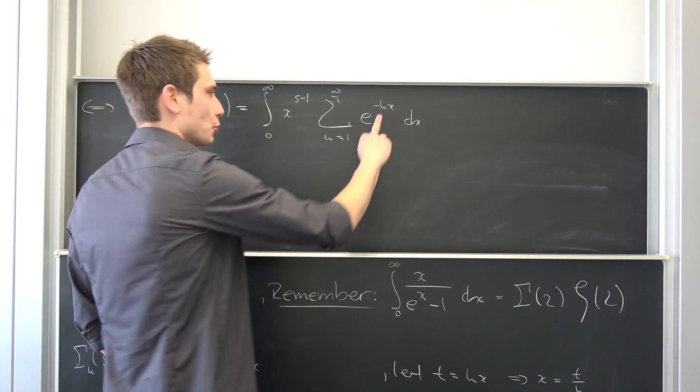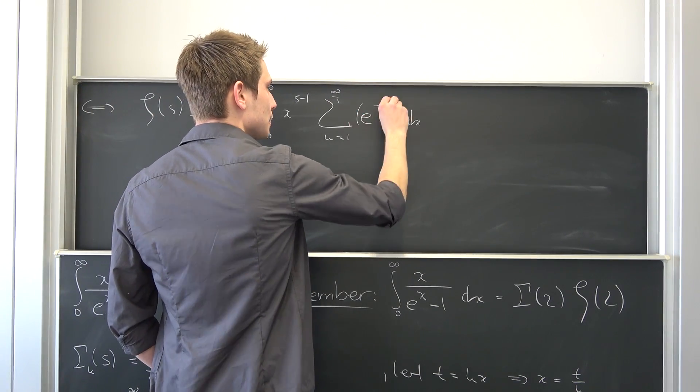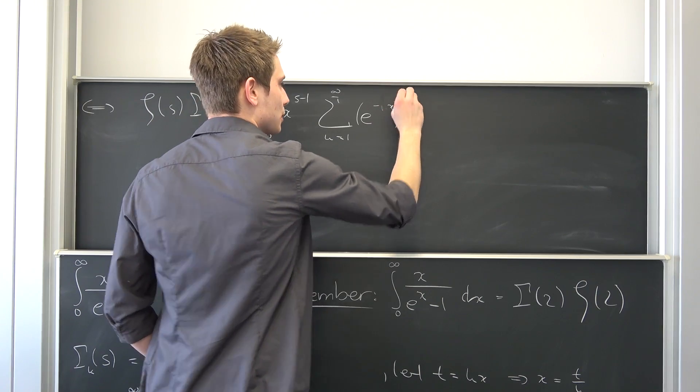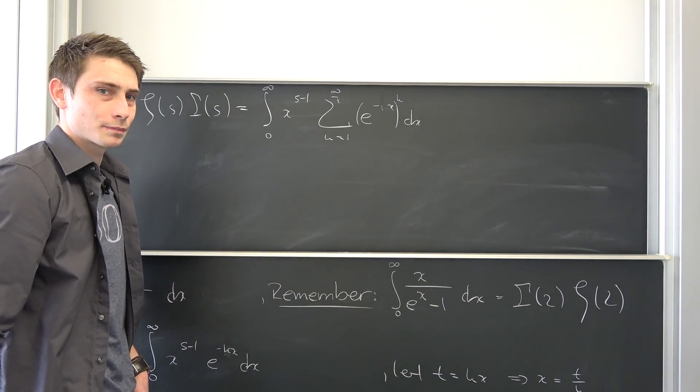Also, by our exponent rules, we can kind of track this k to the outside to get e to the negative x to the k power.